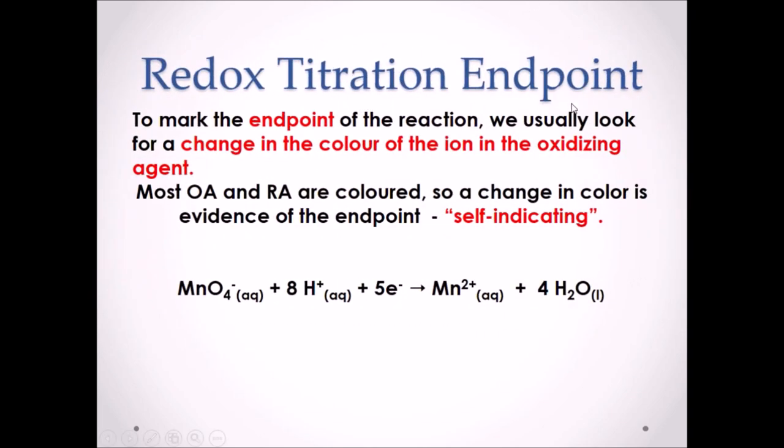Redox titration endpoints. To mark the endpoint of a reaction, we usually look for a change in the color of the ion in the oxidizing agent. Most oxidizing agents and reducing agents are colored, so a change in color is evidence of the endpoint, meaning it will be self-indicating. Therefore, no external indicator is required for a redox titration.